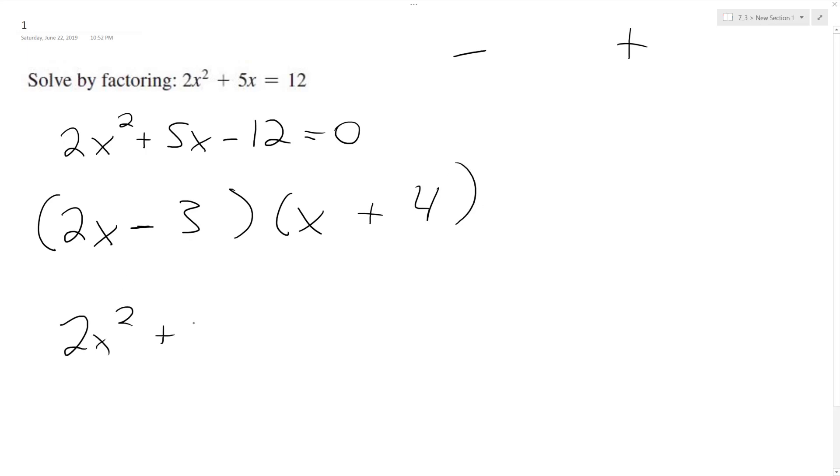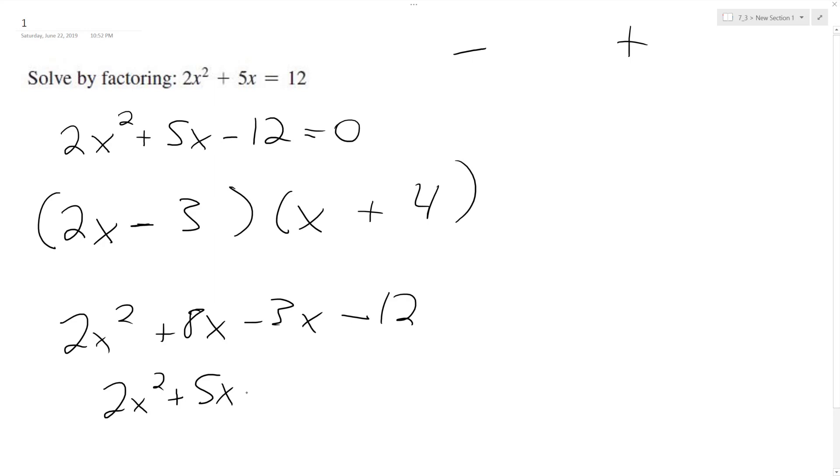So 2x squared plus 4 times 2x is 8x minus 3x. Negative 3 times 4 is 12, negative 12. So 2x squared plus 5x minus 12. So that matches up originally with what we had.